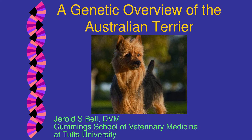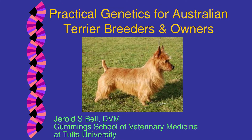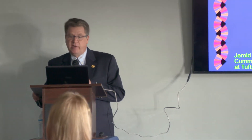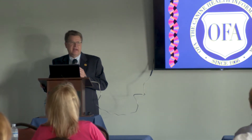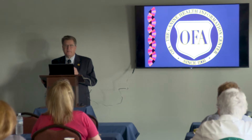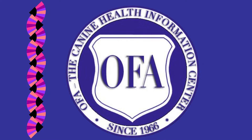We have here a genetic overview of the Australian Terrier — a daunting title, but what we're really talking about is practical genetics for Australian Terrier breeders and owners. I'm not going to be throwing fancy terms at you. It's really just what you need to understand about heredity, about what's going on when you breed dogs, and what we know we see in your breed. I'm a volunteer member of the not-for-profit OFA, so I'll be talking a little bit about some of the tools available from the OFA during the lecture.